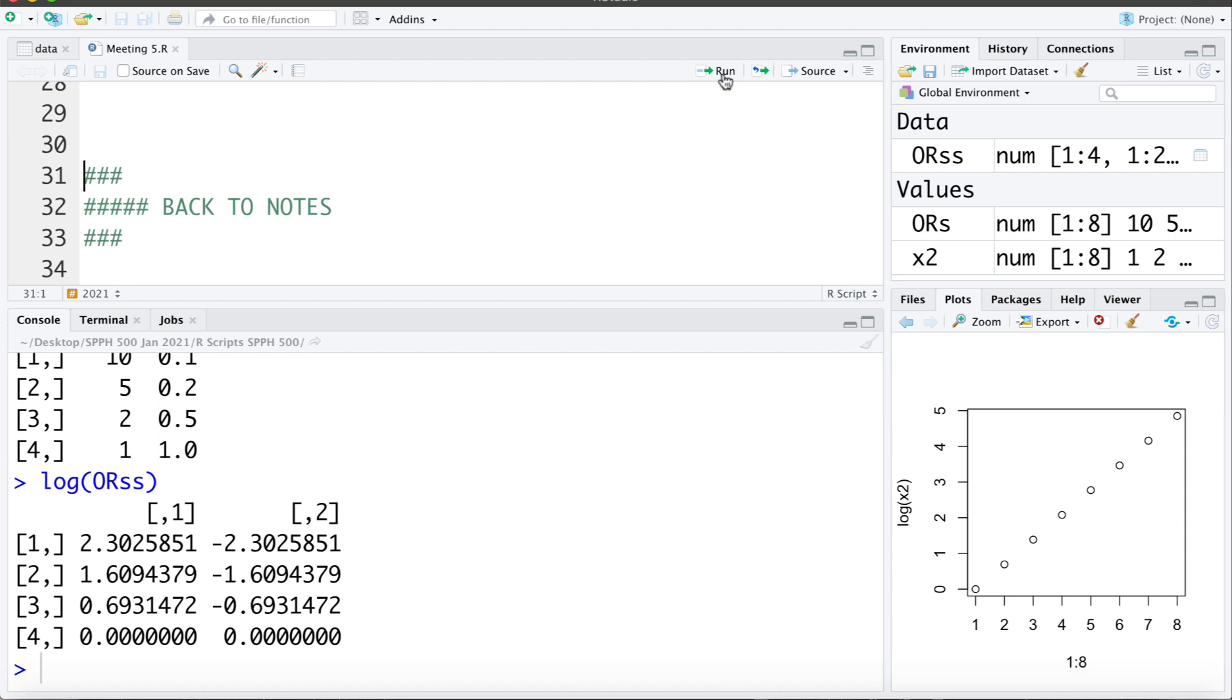So this is going to help us take something that's measured on a multiplicative scale like an odds ratio. We're taking a ratio of odds for exposed to unexposed. We're measuring the odds of disease on a relative scale or a multiplicative scale and by working on the log scale we can move it to an additive scale.